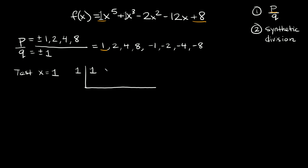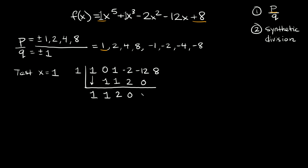After that: x cubed is 1, x squared is negative 2, then we have negative 12 and positive 8. So our row is 1, 0, 1, negative 2, negative 12, and positive 8. We bring this first coefficient straight down, then 1 times 1 is 1. Adding vertically: 0 plus 1 is 1. Then 1 times 1 is 1, and 1 plus 1 is 2. Then 1 times 2 is 2, and negative 2 plus 2 is 0. Then 1 times 0 is 0, and negative 12 plus 0 is negative 12. Then 1 times negative 12 is negative 12.